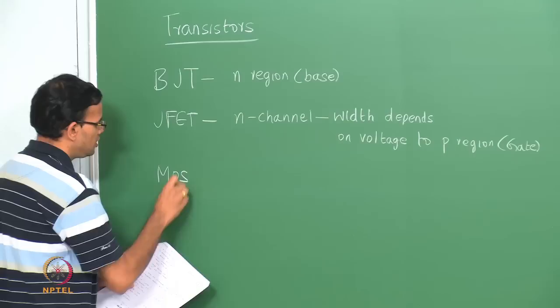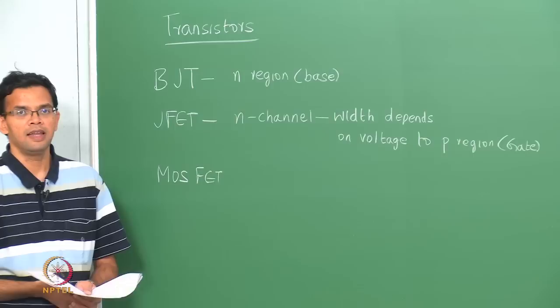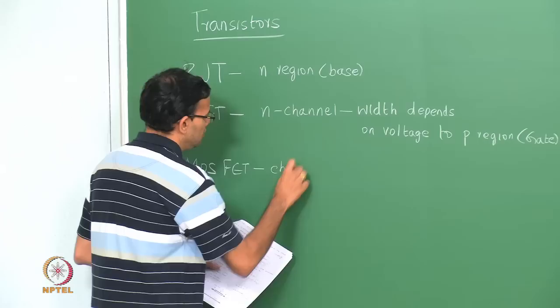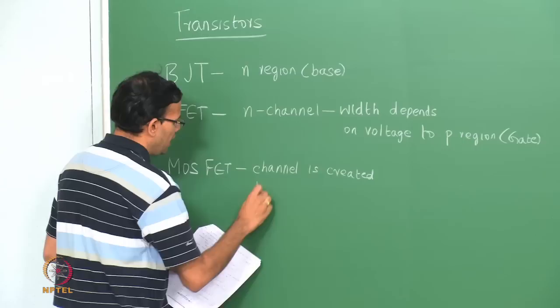Towards the end of last class, we started looking at a metal oxide semiconductor field effect transistor. In this particular case, the channel is not there initially when the device is in equilibrium, but the channel is created by applying a bias.